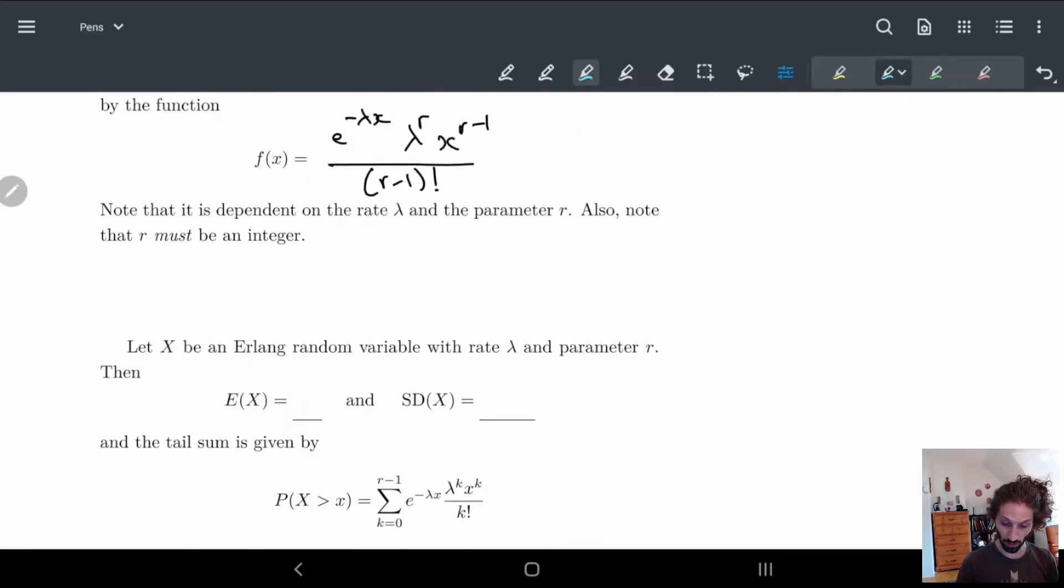Now, one thing to note is for the Erlang distribution, r must be an integer. If r is not an integer, this doesn't work, right? I'm counting the number of how often something happens, right? So it doesn't make sense for us to have something that's not an integer. A positive integer, in fact. So Erlang is only defined on integers.